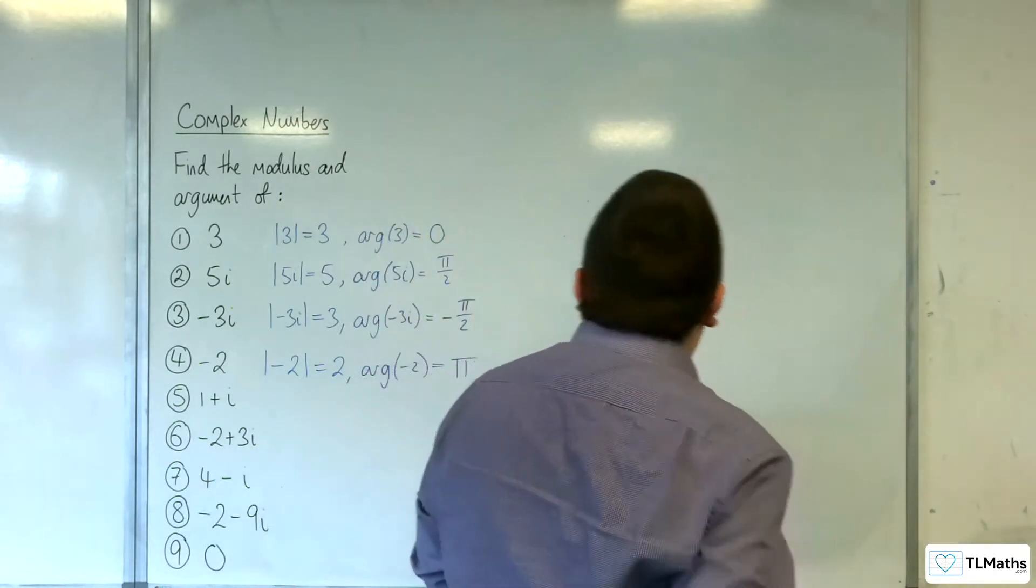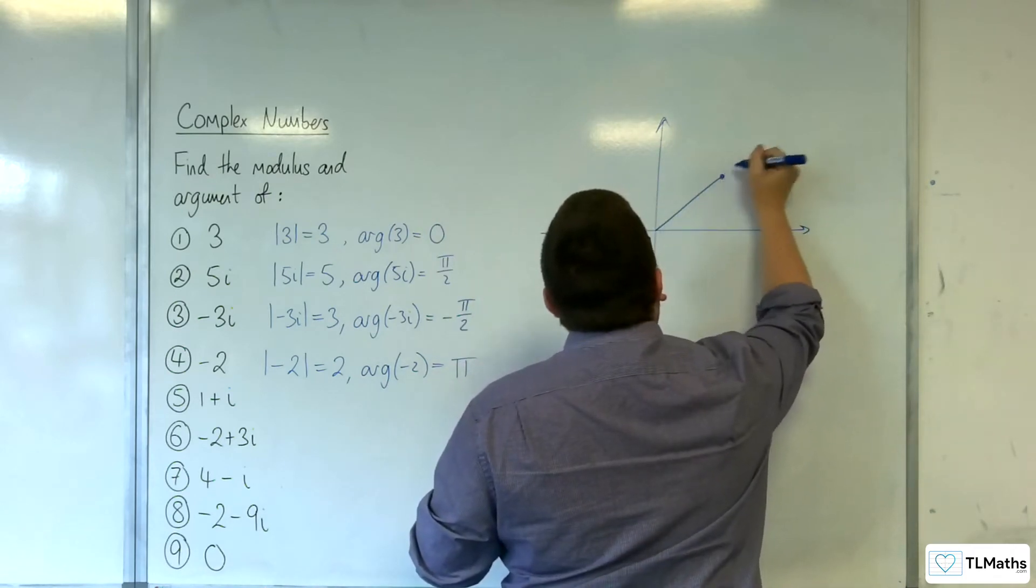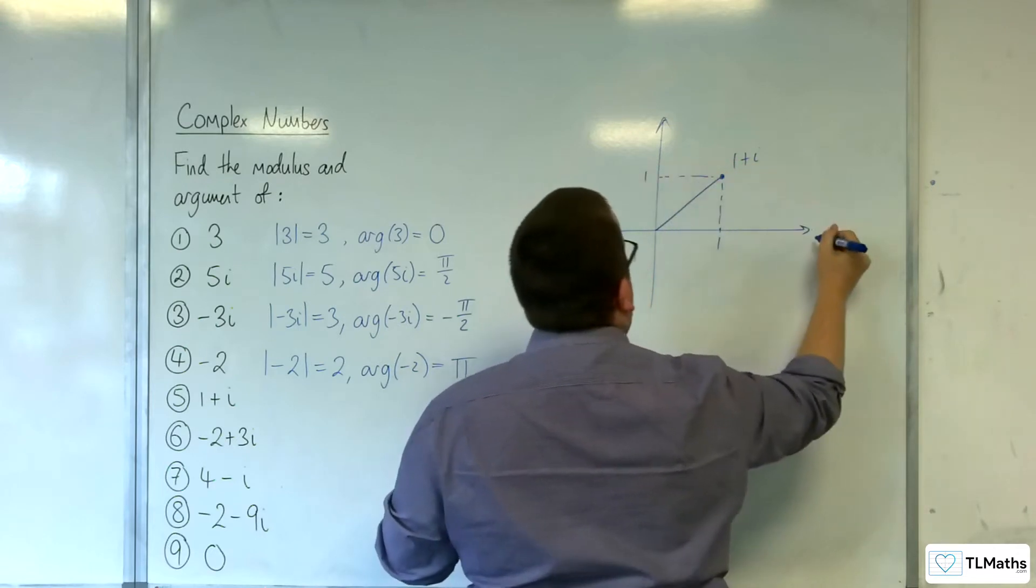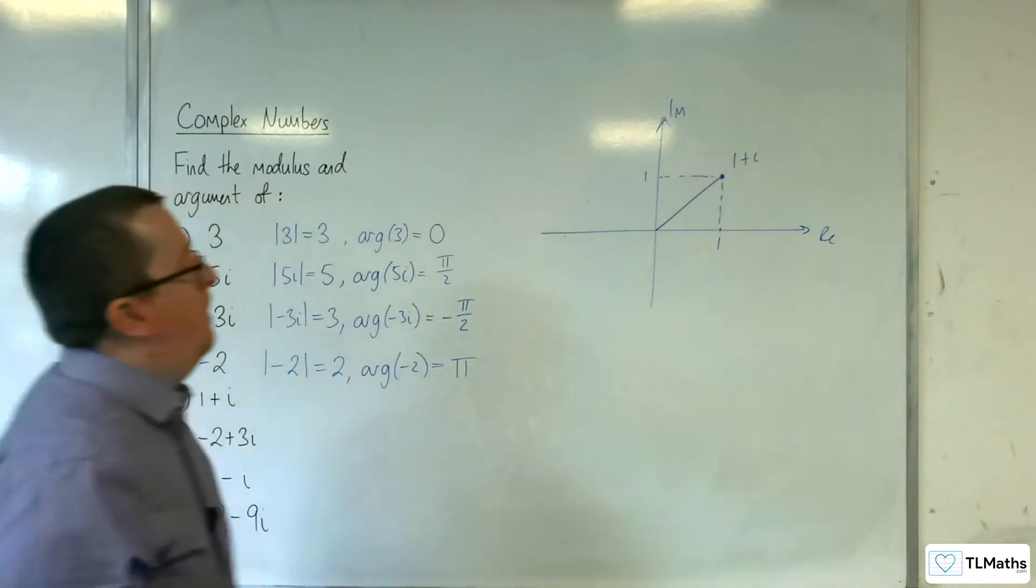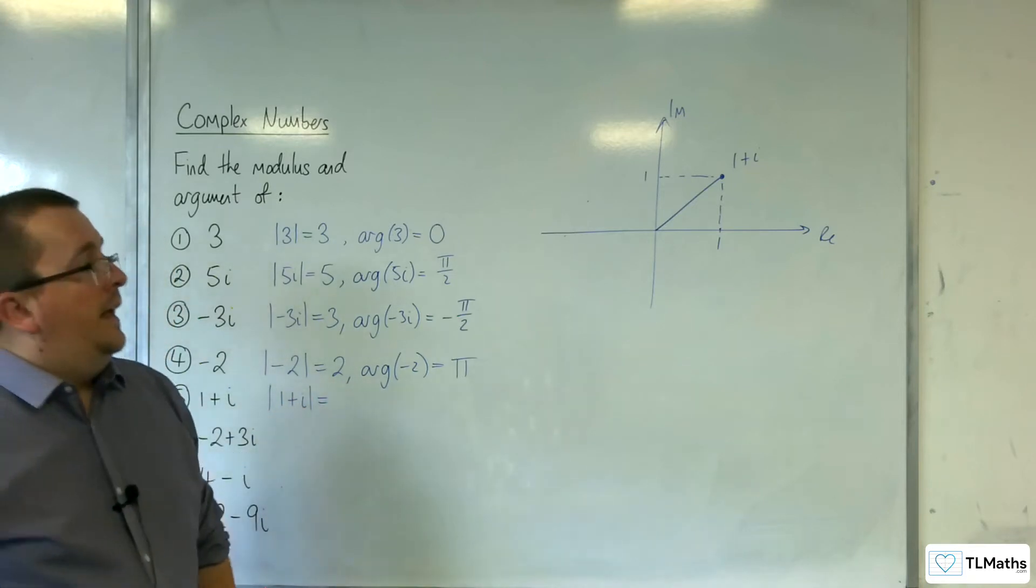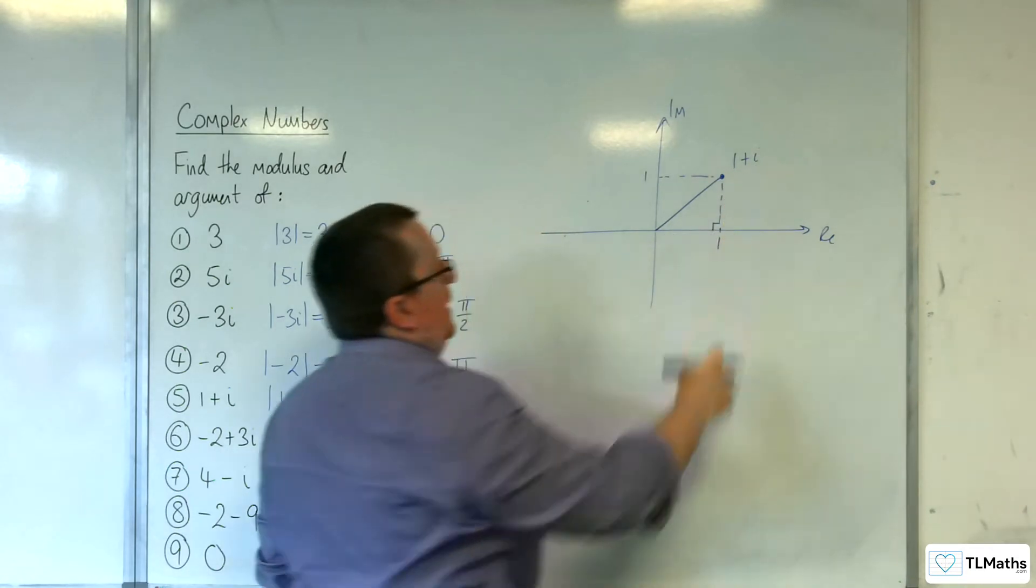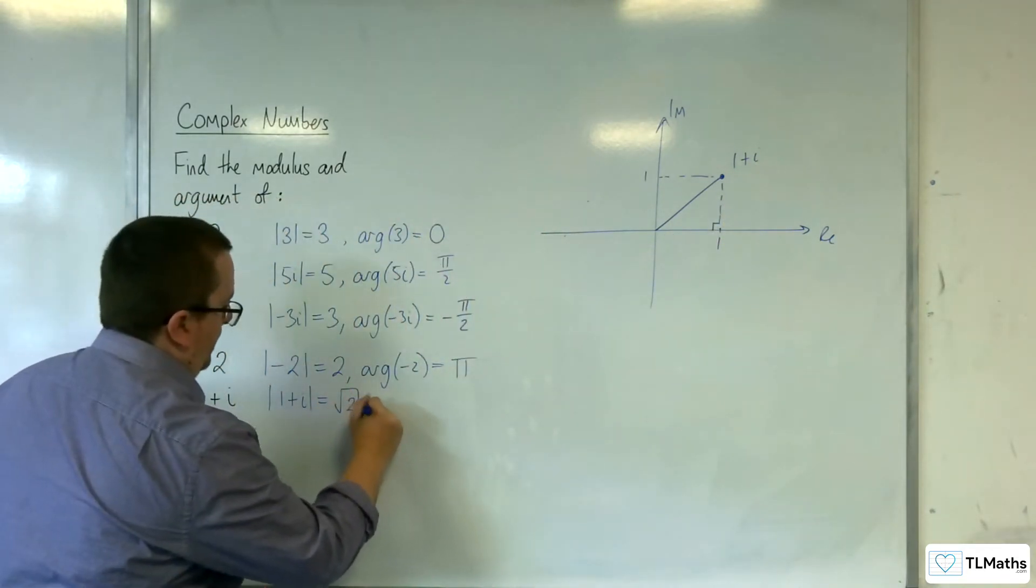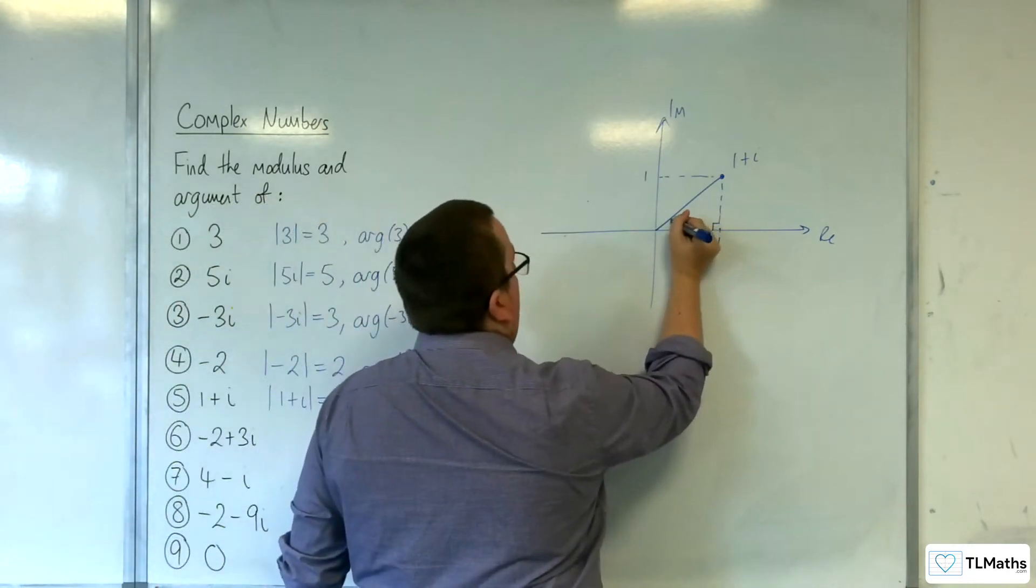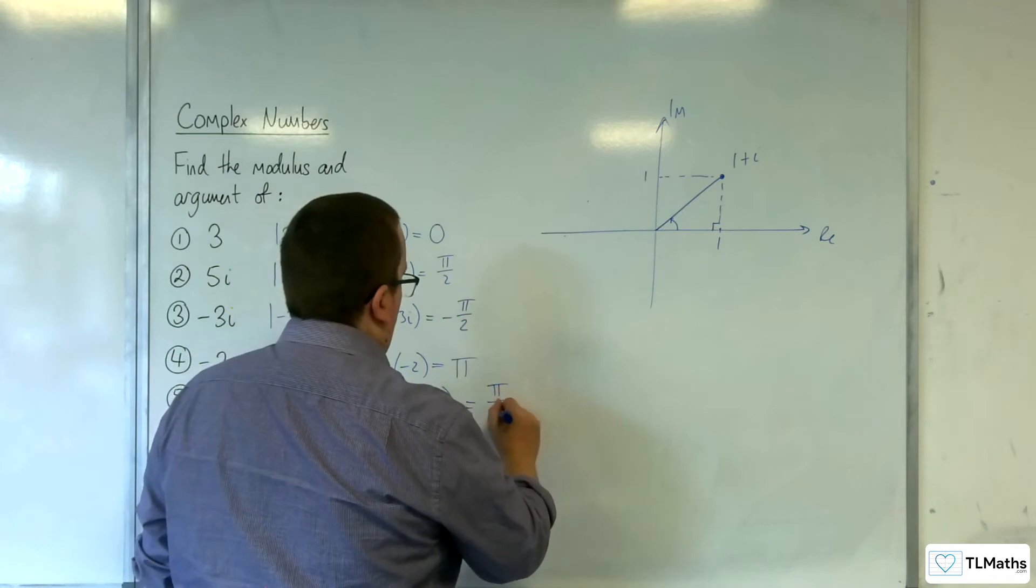Let's have a look at this next one. So 1+i. There's 1+i. We are 1 along and 1 up. The length of this complex number, the modulus of it, is using Pythagoras, the square root of 1² + 1². So root 2. The argument is this angle here. Of course, that's 45 degrees, so that's π over 4.